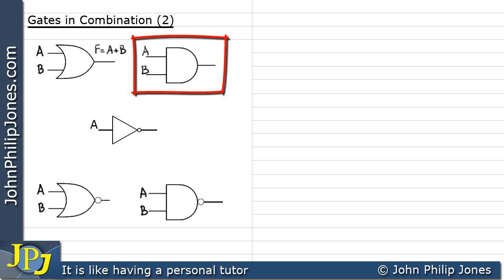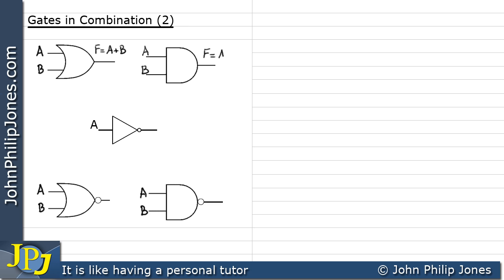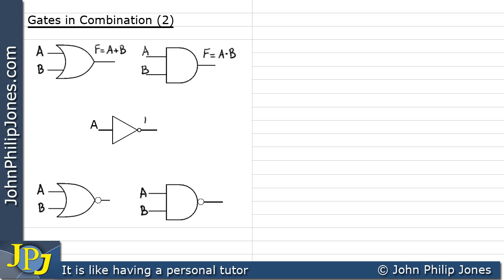If we come to the AND gate, the expression at the output is F equals A AND B. This gate, which is a one-input NOT gate — and in fact you can only have one input to a NOT gate — the output is F equals NOT A.